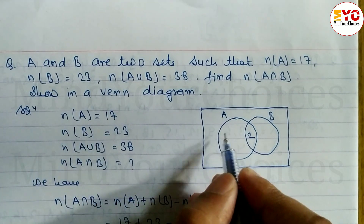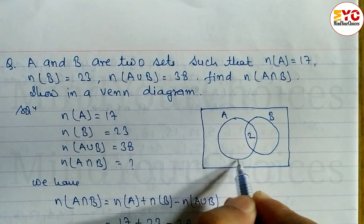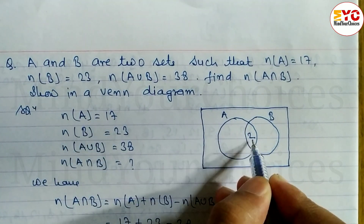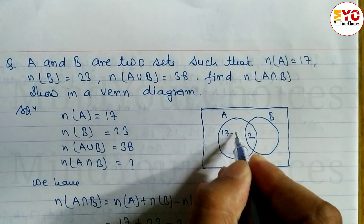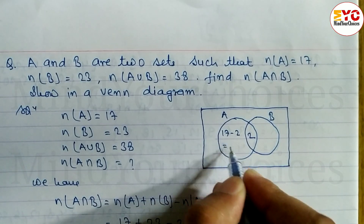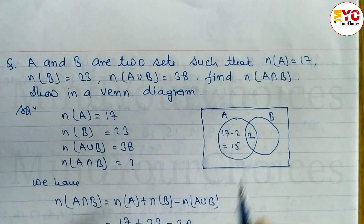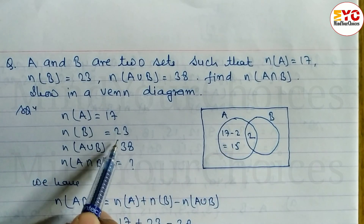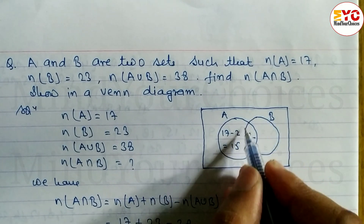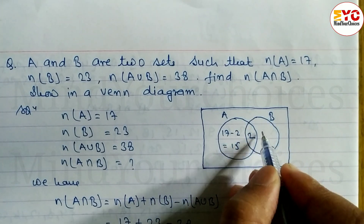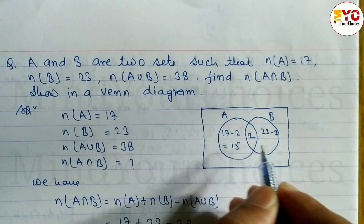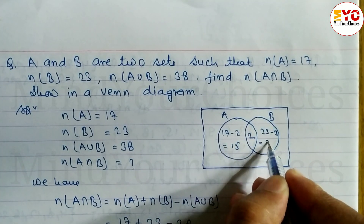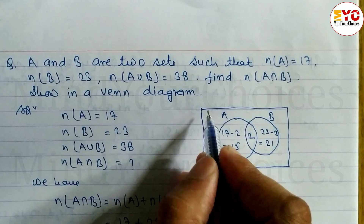n(A) is equal to 17 — this whole set is 17. But 2 is already in the intersection, so we write 17 minus 2, which equals 15, in the only-A region. Cardinal number of B is 23, so 23 minus 2 gives us 21, which we write in the only-B region.